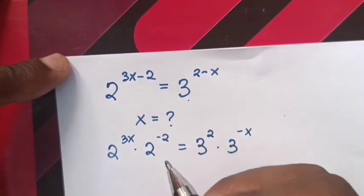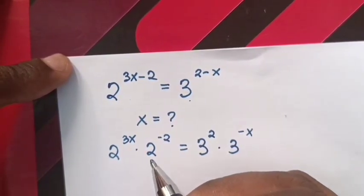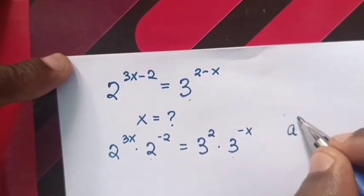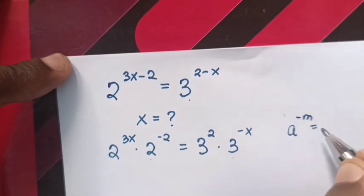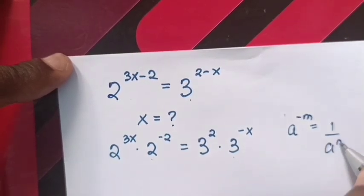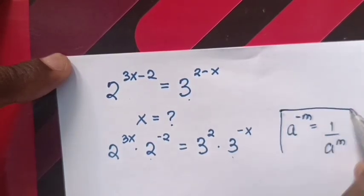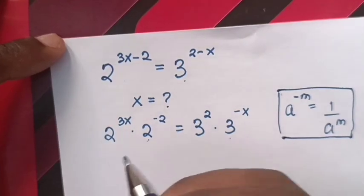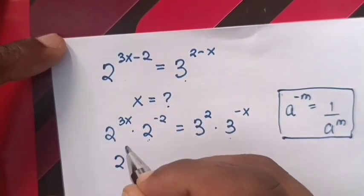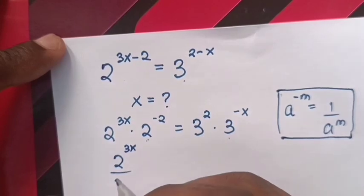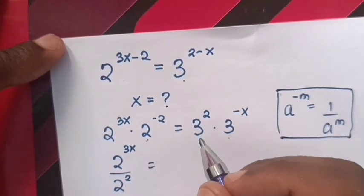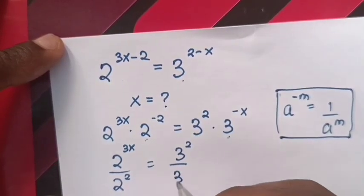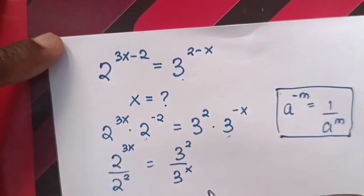For these negative exponents, we will apply the exponential rule that a power negative m is equals to 1 over a power m. So our equation will be 2 power 3x over 2 power 2 is equals to 3 power 2 over 3 power x.